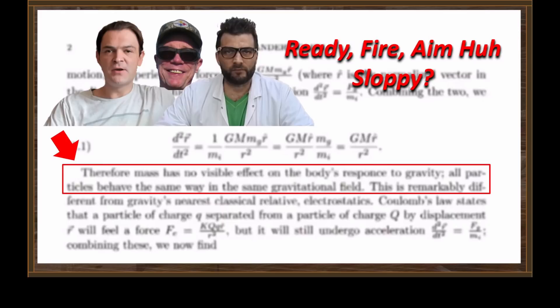"Therefore, mass has no visible effect on the body's response to gravity. All particles behave the same way in the same gravitational field." You mean to tell me you three idiots can't read that sentence and understand that all it's telling you is that all objects, regardless of their mass, will accelerate in a vacuum at exactly the same rate? That's that newfangled idea we've had now for about 400 years. Since you clowns apparently don't get it, let me explain to you how that works.